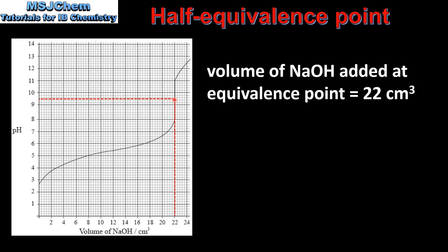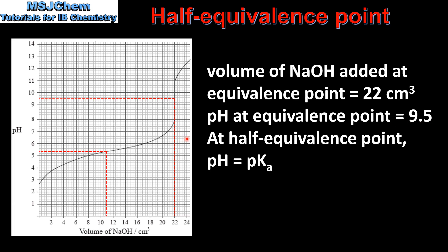If we draw a straight line across from the equivalence point to the y-axis, we can get the pH at the equivalence point, which is 9.5. Next we will determine the pKa of the weak acid, so at the half equivalence point the pH is equal to the pKa.